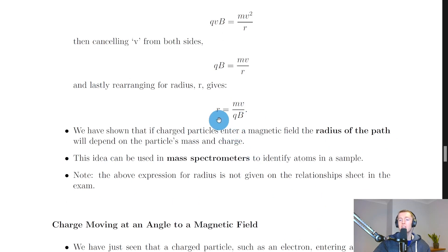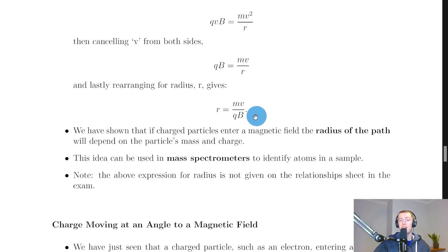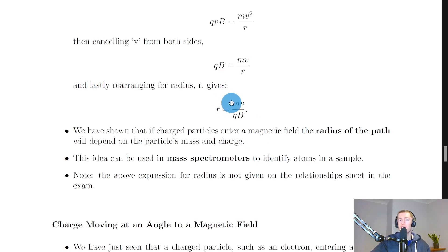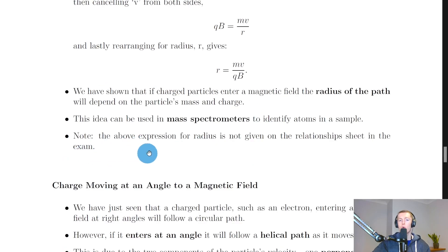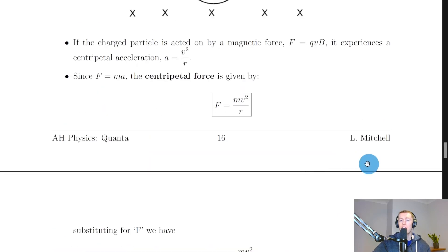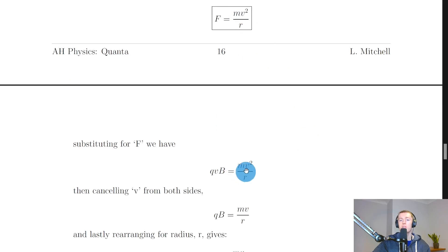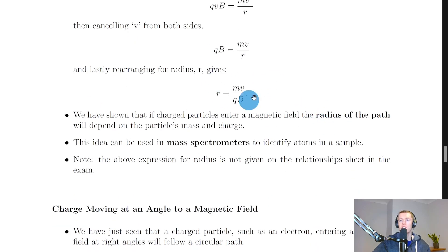The radius of the circular path depends on the particle's mass and charge Q, as well as the strength of the magnetic field and the particle's speed. A more massive particle has a bigger radius of curvature, and a weaker magnetic field also gives a larger radius. This idea is used in mass spectrometers to identify atoms. Note that the expression for radius is not given on the relationship sheet, so you need to be able to derive it.